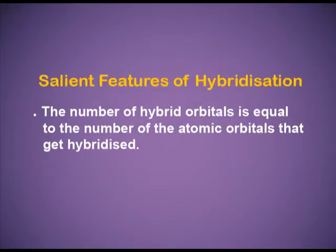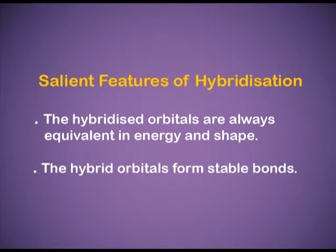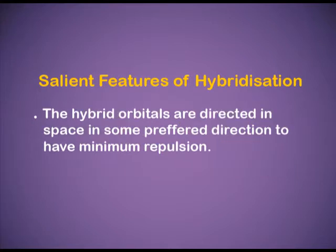Salient features of hybridization: the number of hybrid orbitals is equal to the number of atomic orbitals that get hybridized. The hybridized orbitals are always equivalent in energy and shape. The hybrid orbitals form stable bonds, and they are directed in space in some preferred direction to have minimum repulsion.